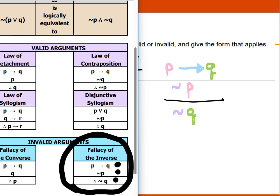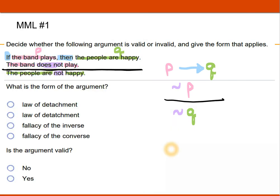So fallacy of the inverse. So I'm going to click on fallacy of the inverse. It's going to be that one. And since it's a fallacy, that's not a valid argument. The fallacies are invalid, the laws are valid. So that is number one.